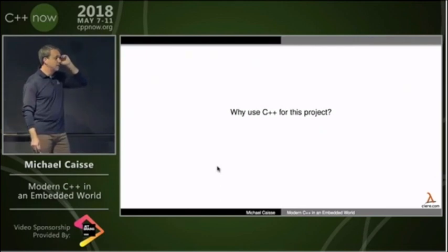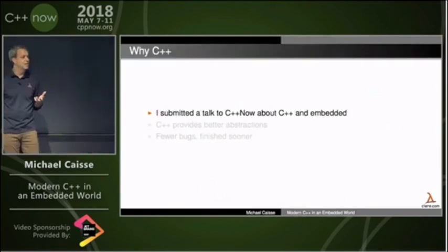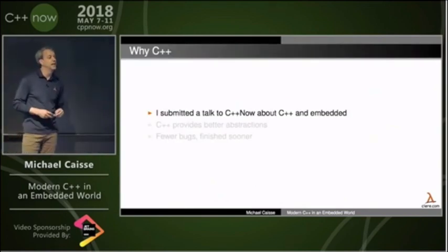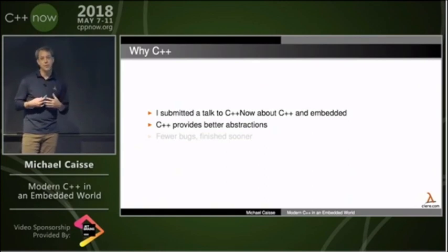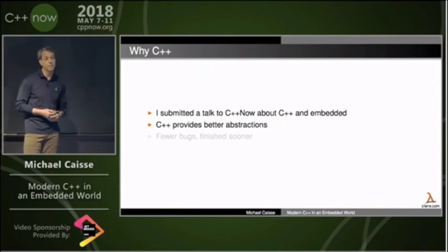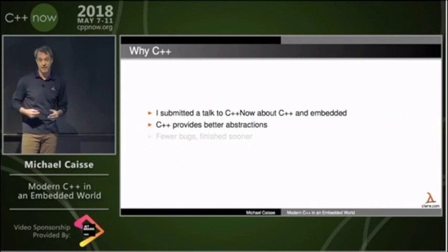So the question is why use C++ for this project? Why not just use C like everybody else in their right mind uses C? I typically try to use C++ if I can for a variety of different reasons. One, it provides abstractions that I believe are easier to work with and I will have a better result in the end. I'm able to think about problems at a higher level. Now what's interesting is what I think is a good thing, the majority of the embedded world thinks is a horrible thing.